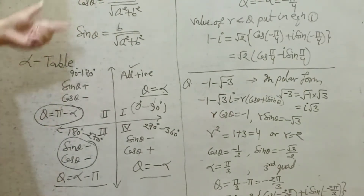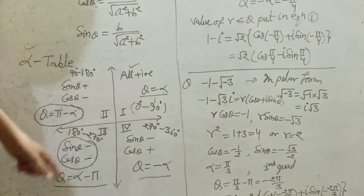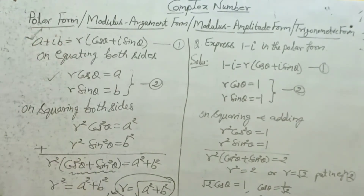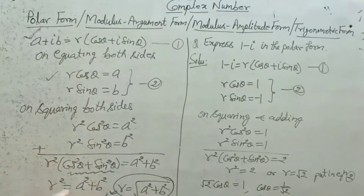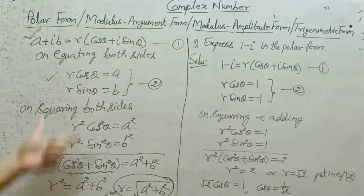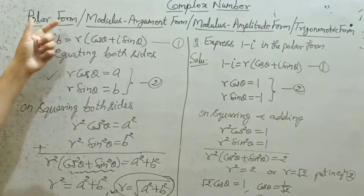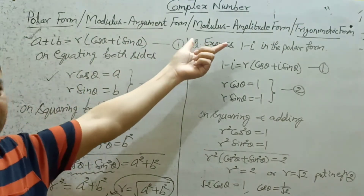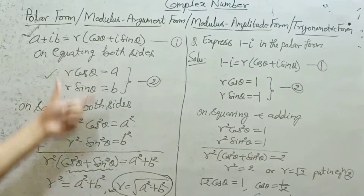Once theta is found — and R (modulus) was already calculated — put the values of R and theta in equation one. That gives you the polar form, also called modulus argument form, modulus amplitude form, or trigonometric form. All four names refer to the same thing. The most popular name is polar form.